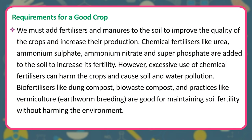We must add fertilizers and manures to the soil to improve the quality of crops and increase their production. Chemical fertilizers like urea, ammonium sulfate, ammonium nitrate and superphosphate are added to increase soil fertility. However, excessive use of chemical fertilizers can harm the crops and cause soil and water pollution. Bio-fertilizers like dung compost, bio-waste compost, and practices like vermiculture (earthworm breeding) are good for maintaining soil fertility without harming the environment.